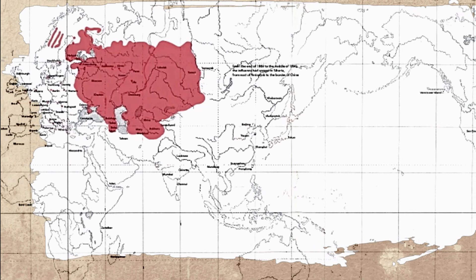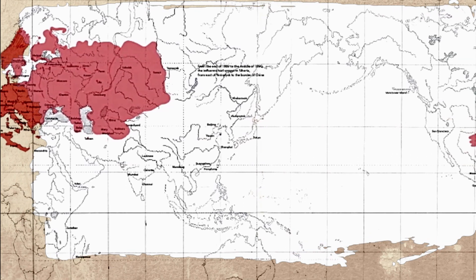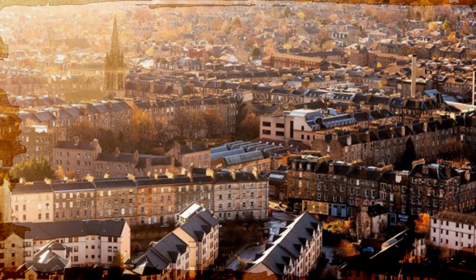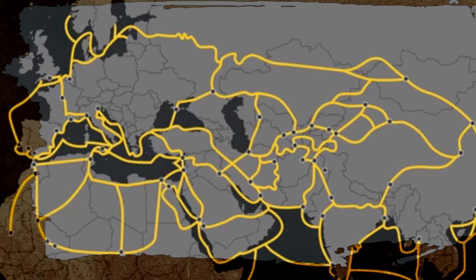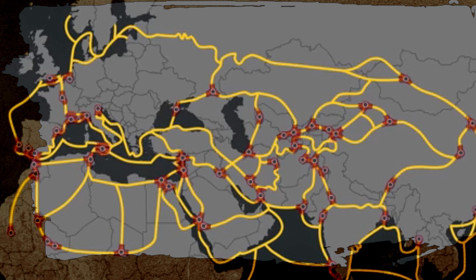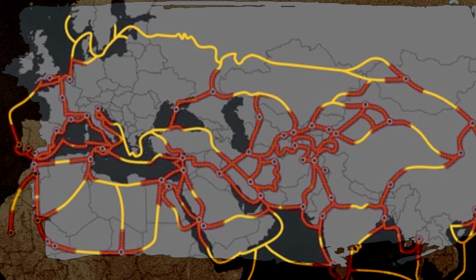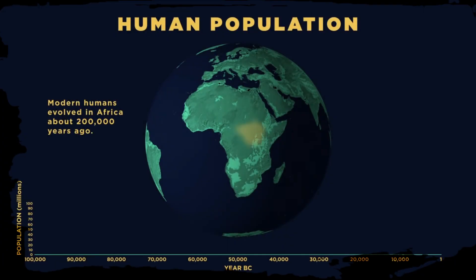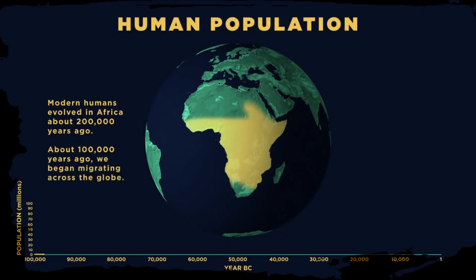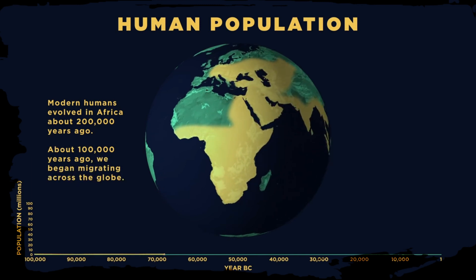Pandemics' impact is worldwide, unlike epidemics. The more civilized humans became — with larger cities, more exotic trade routes, and increased contact with different populations of people, animals, and ecosystems — the more likely pandemics would occur. As humans have spread across the world, so have infectious diseases, and even in this modern era, outbreaks are nearly constant.